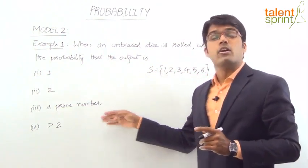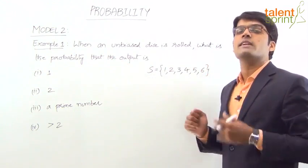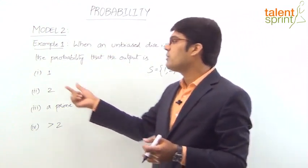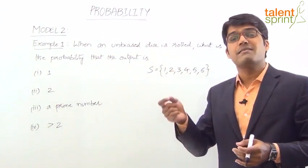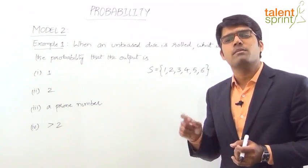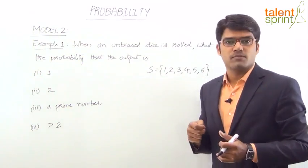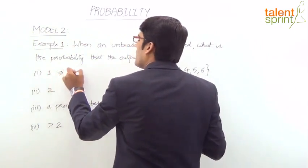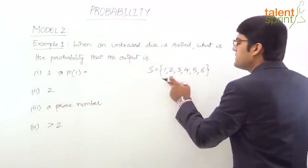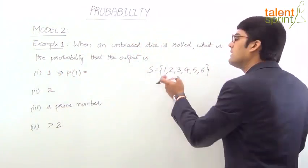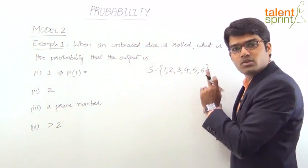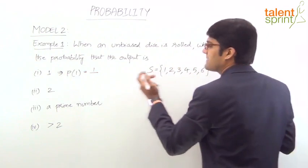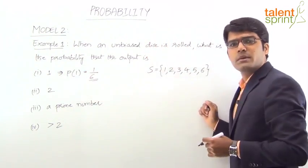In all cases we have to check the number of favorable cases. Probability is number of favorable cases divided by total number of cases. So, what is the probability that the output is 1? Output 1 occurs in one way, so number of favorable cases is 1 divided by total 6. The answer is 1/6.